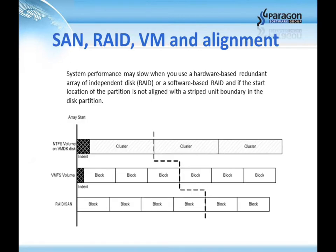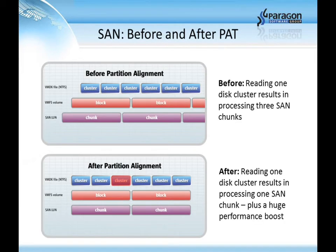System performance may become slow when you use a hardware-based RAID, or redundant array of independent disks, or when using a software RAID, if the start location of the partition is not aligned with the striped unit boundary in the disk partition. A SAN, which is short for Storage Area Network, before partition alignment will read one disk cluster resulting in processing three SAN chunks, while after alignment reading one disk cluster will result in processing one SAN chunk, which causes a significant performance boost.